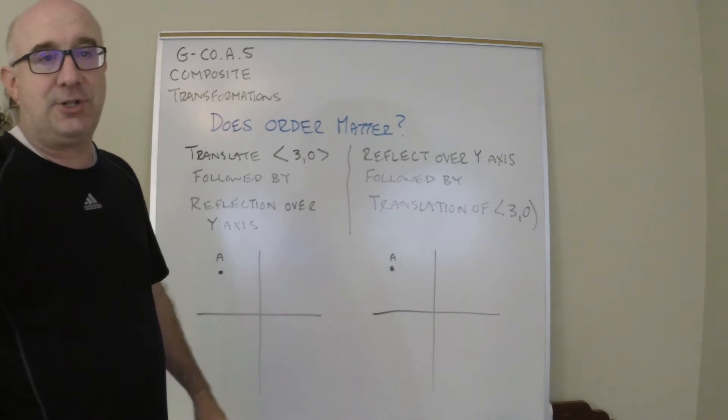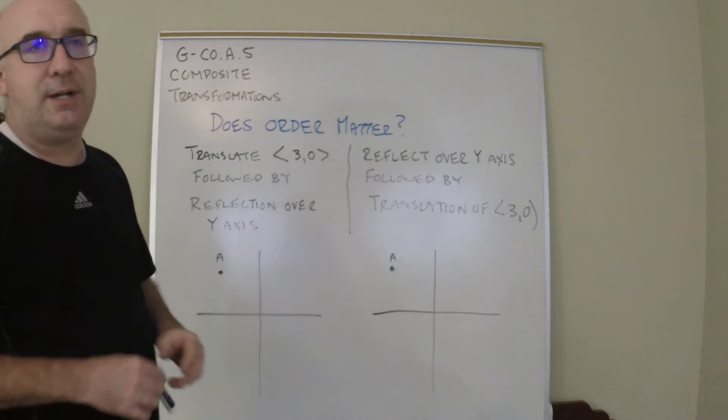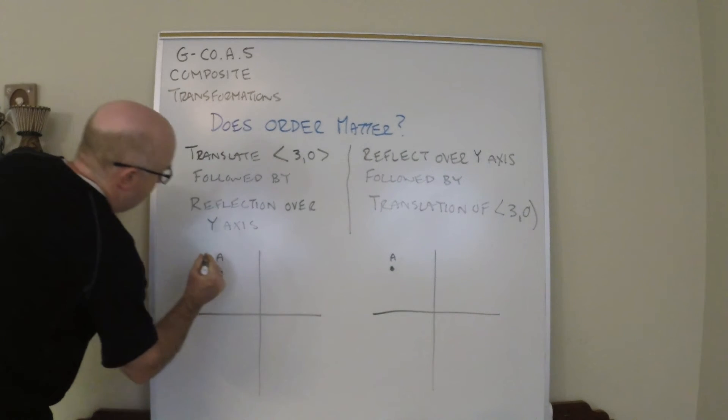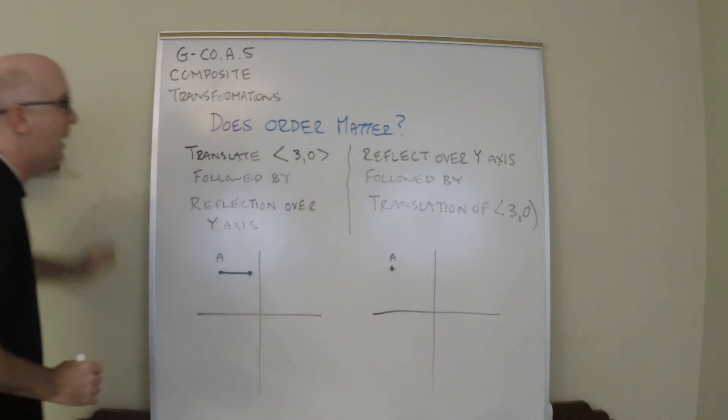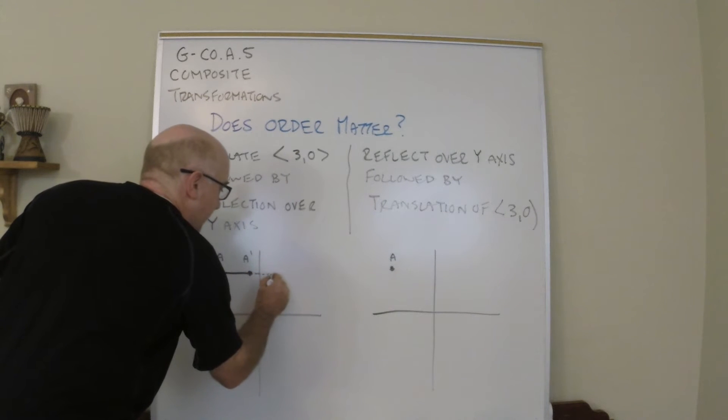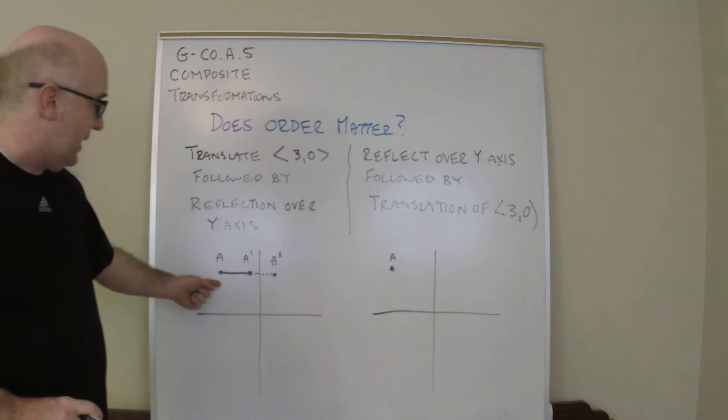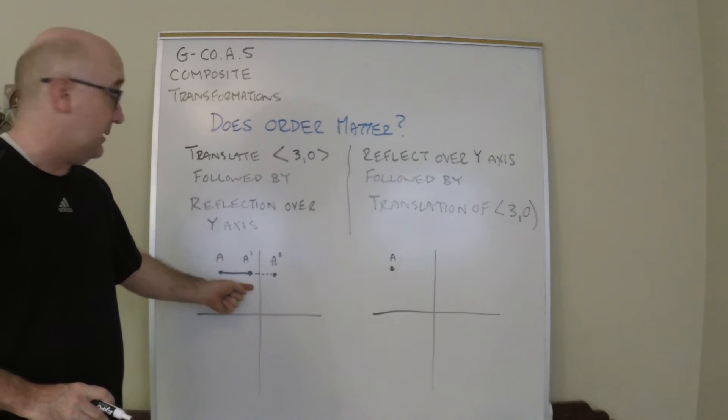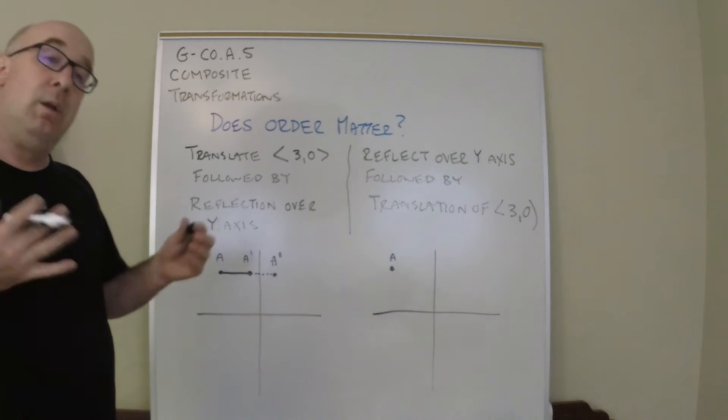So here we're going to translate first and then perform a reflection. I don't have grid points here, but basically the idea is let's say I translate three to the right to get here, and then I reflect that over the y-axis. So I would result in this location—a translation three to the right and then a reflection over the y-axis.